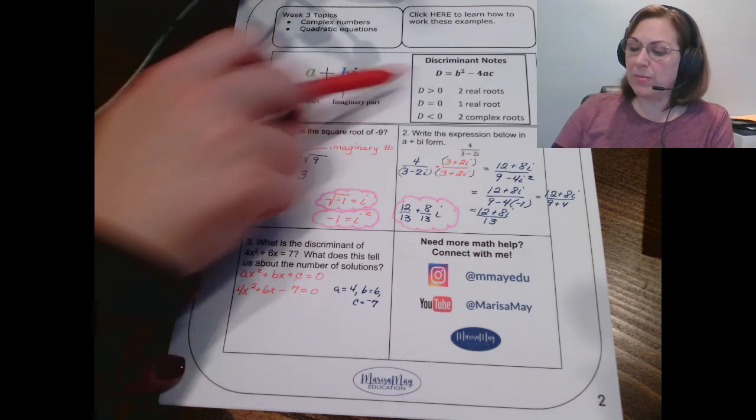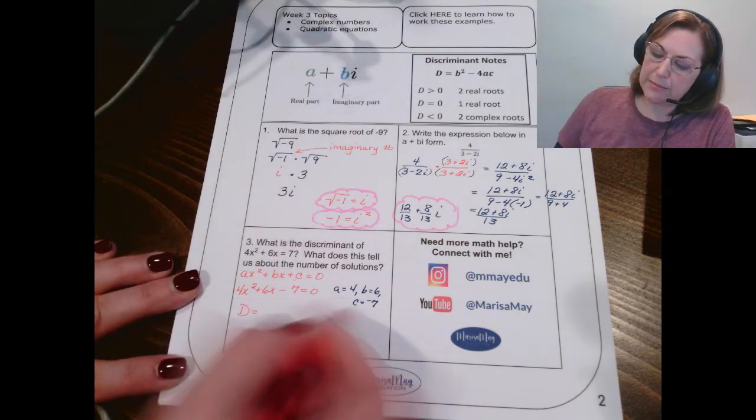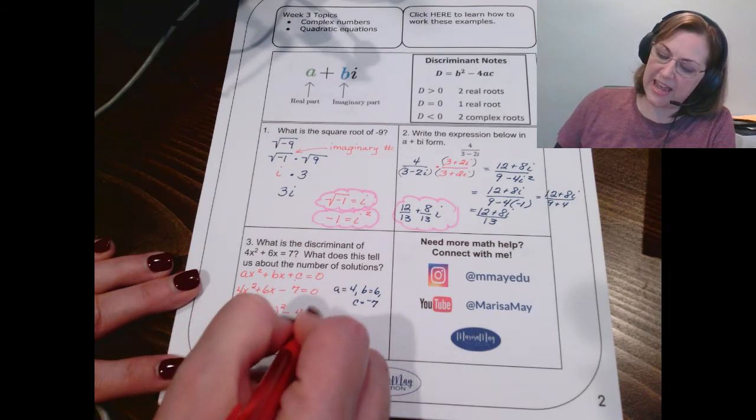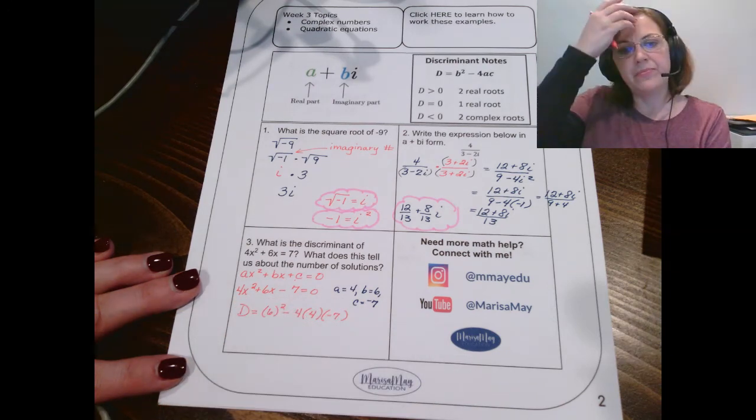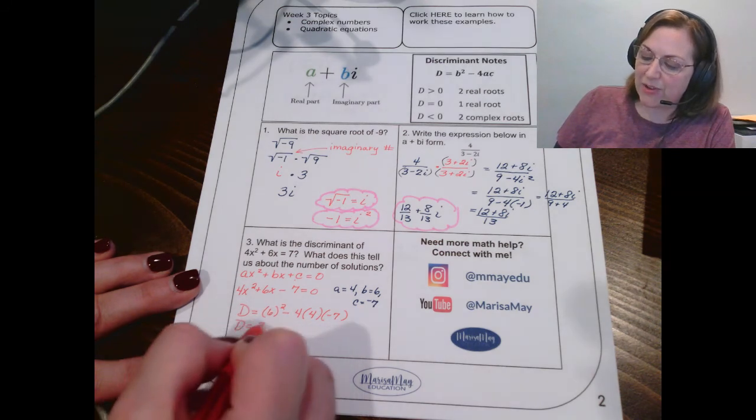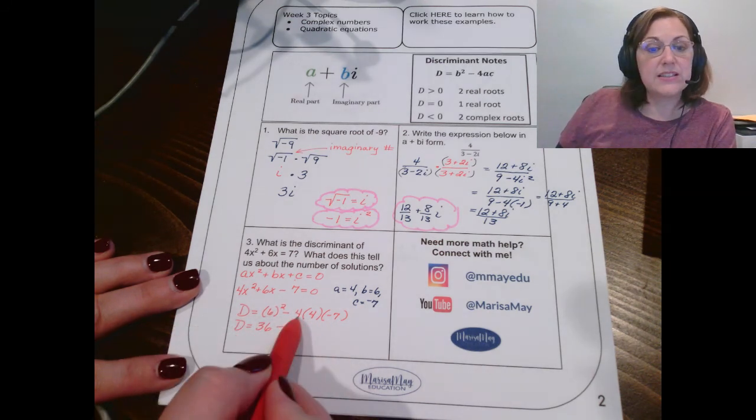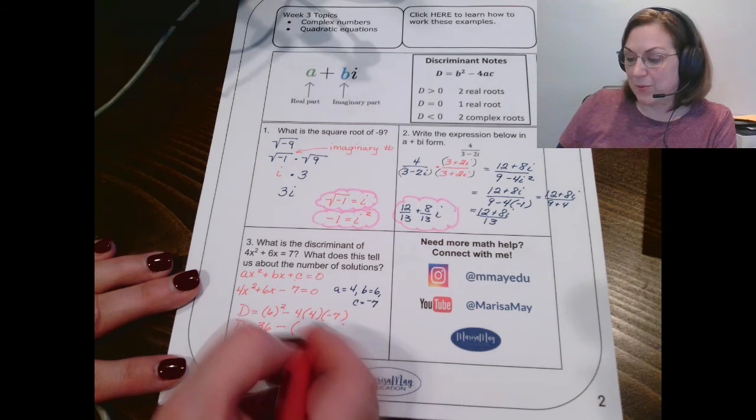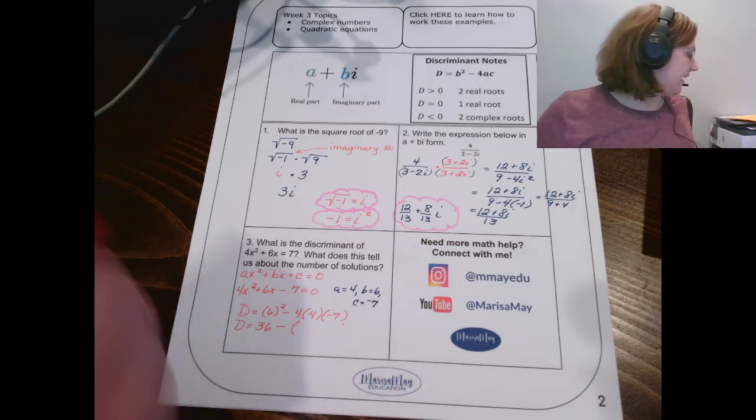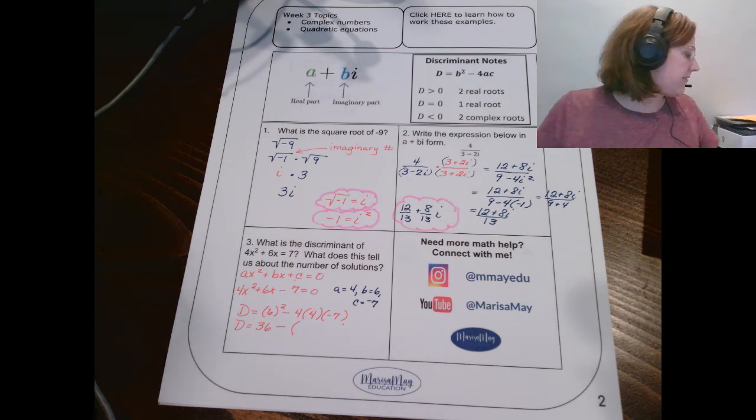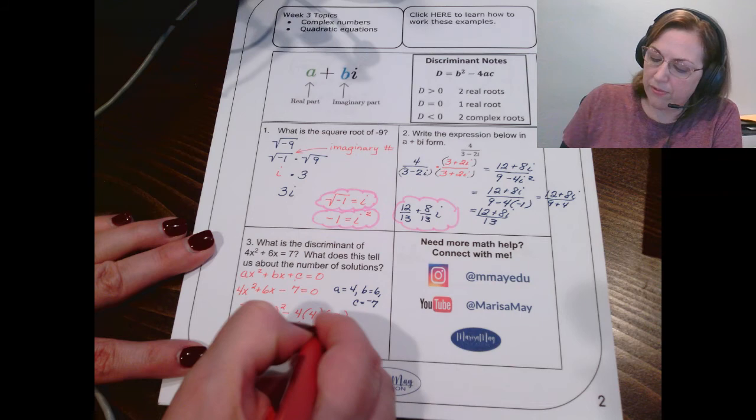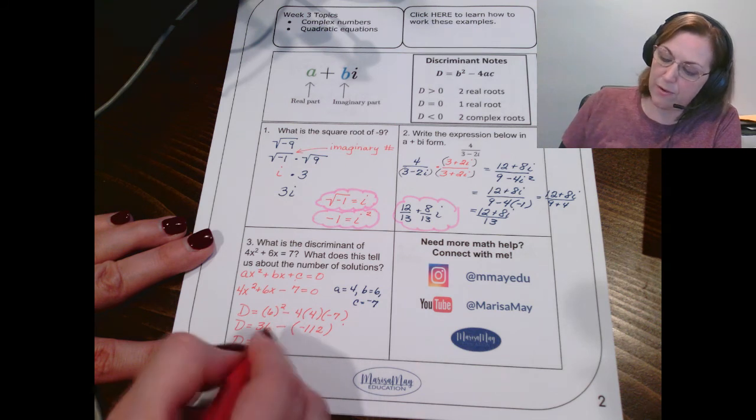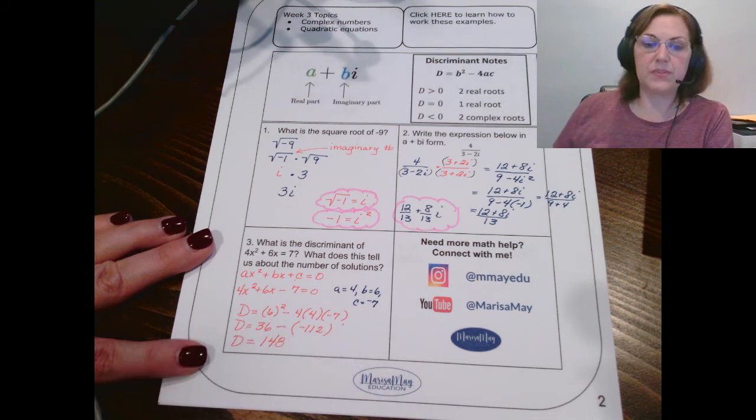So, now use our discriminant notes. The discriminant is B squared. That's 6 squared minus 4 times A times C. Okay, let's find this value. I've got 36 minus 16 times negative 7. 16 times negative 7 would be, I'm going to check my arithmetic here. 16 times negative 7 gives me negative 112, and so the discriminant is a positive 148.